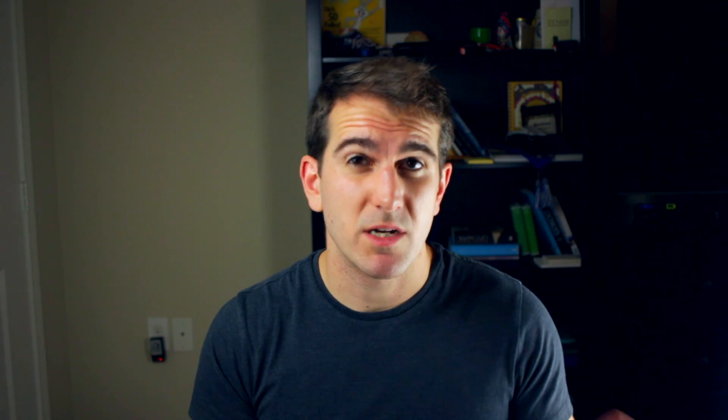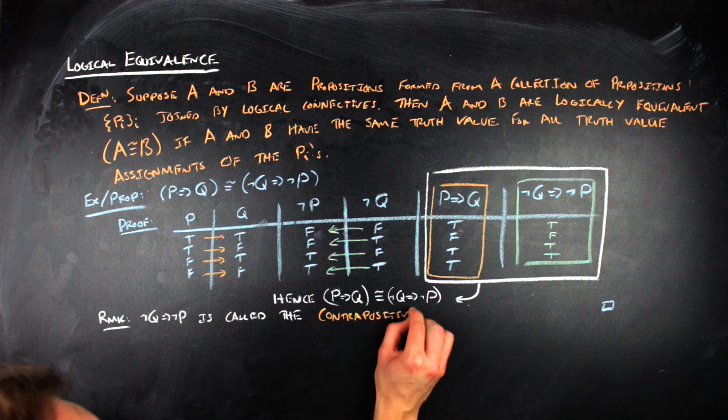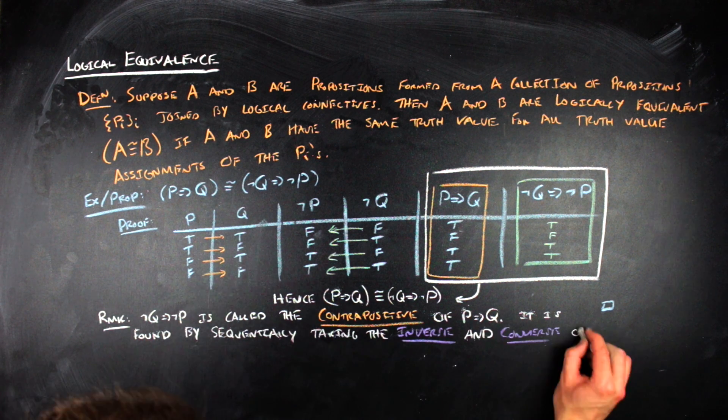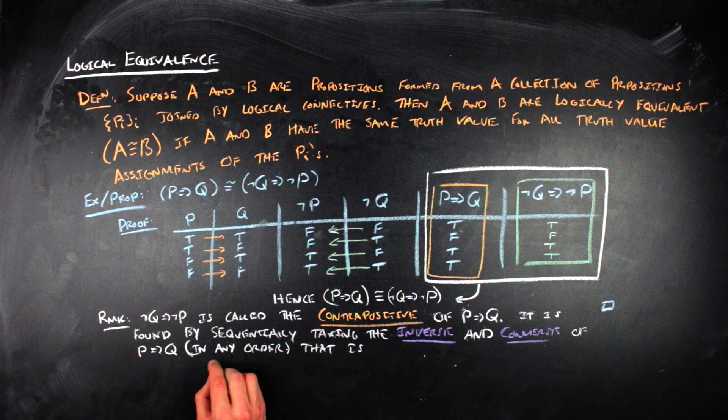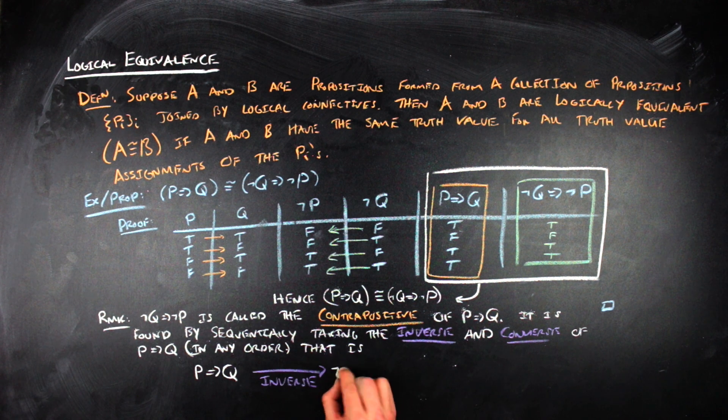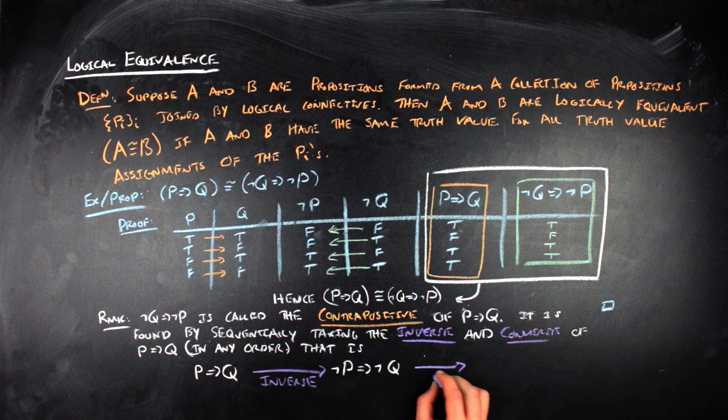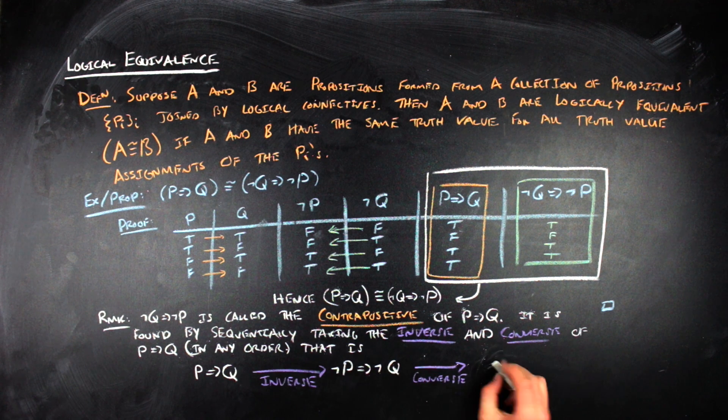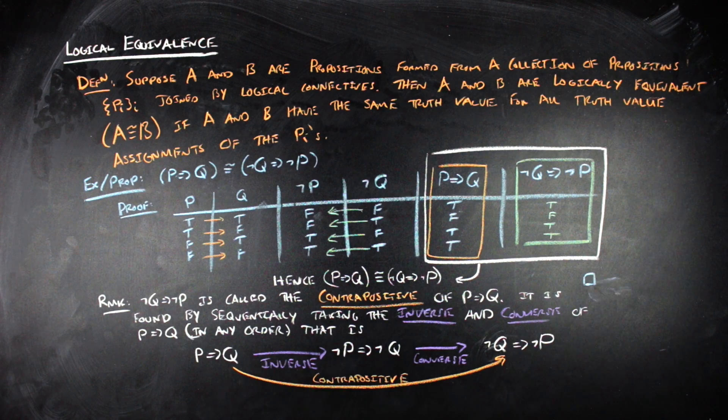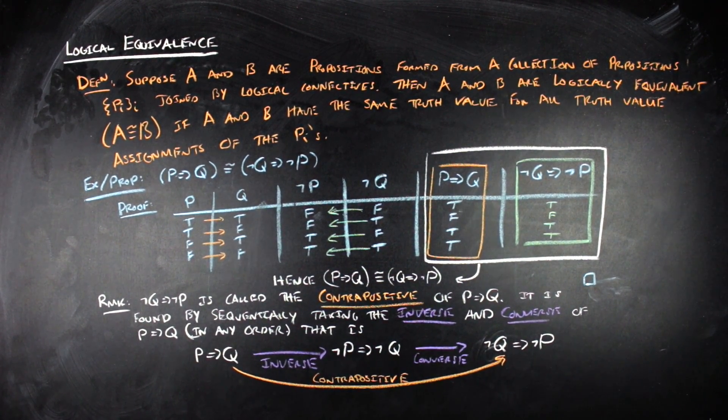So another thing that's important to point out about conditionals, that if you have a conditional statement, P implies Q, then not Q implies not P is called the contrapositive statement. And it's formed by successfully taking the inverse and the converse of the original conditional in any order. So what that looks like pictorially is that you have P implies Q, and then you can do the inverse to get not P implies not Q, which is what the inverse is defined to be, even though I'm not going to write it formally on the board. And then similar for the converse, if you then take the converse of that statement, that's going to flip the not P and the not Q. So you'll get not Q implies not P. And so again, converse here, by definition, just flips the hypothesis and the conclusion of your conditional, even though I'm not going to write it formally on the board. And so when you do both of those operations successively, you end up doing the contrapositive operation in total to the conditional.